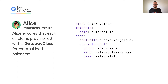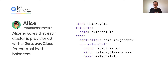As an infrastructure provider, Alice ensures that each cluster she provisions includes a standard set of gateway classes. These resources describe types of load-balancing infrastructure that can be provisioned. In this example, we'll be using the standard ExternalLB gateway class that she has defined.